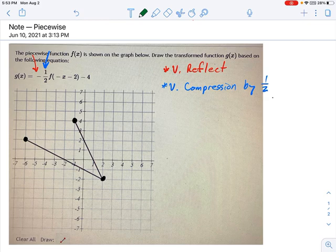So now, what else do I have? I have a vertical—sorry, that's not vertical at all, that's inside parentheses. That is a horizontal reflection.